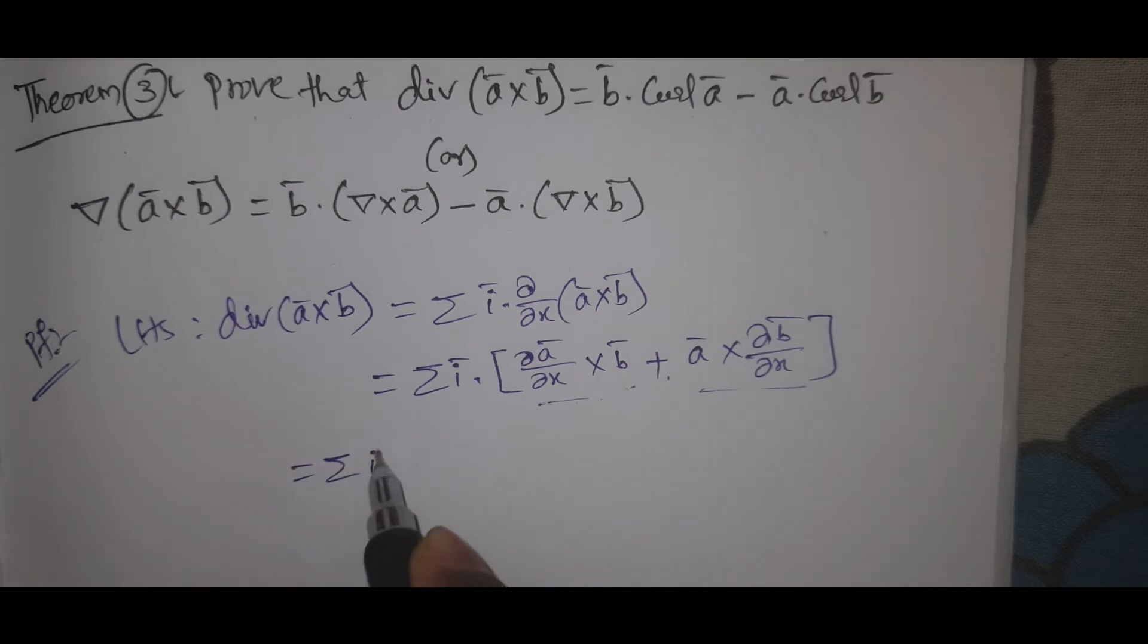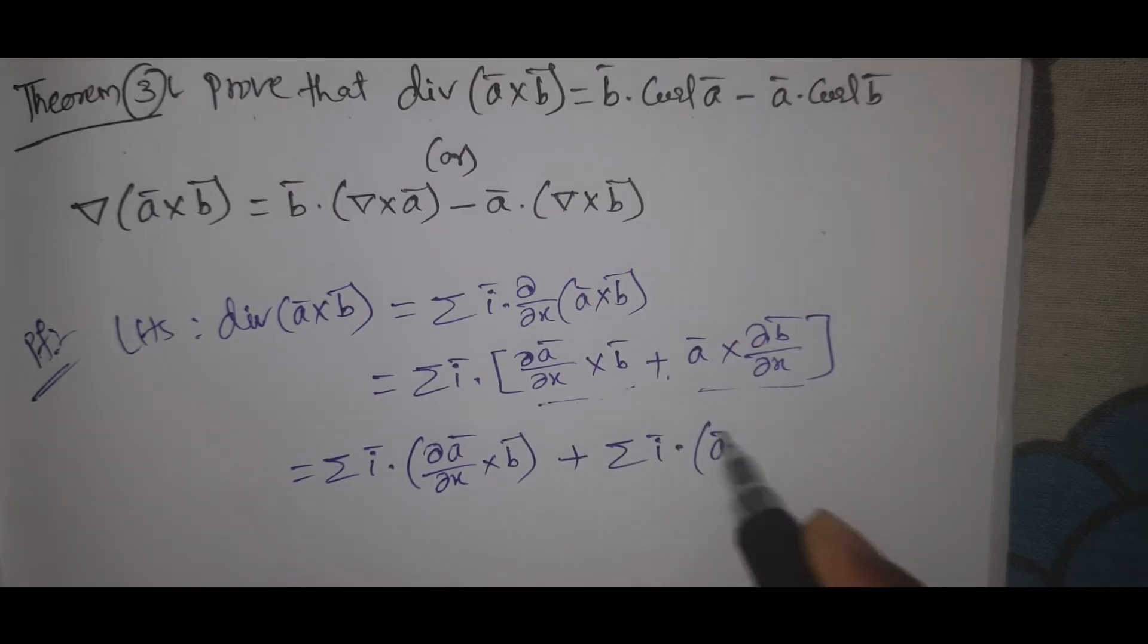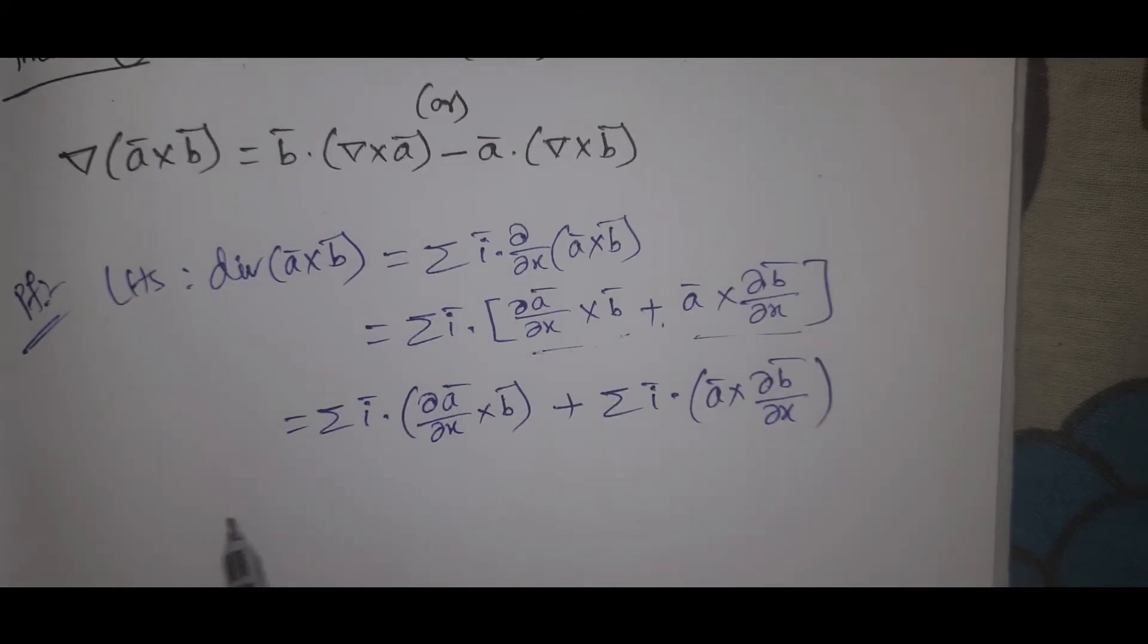Now see here, that equal to summation i bar dot dou a bar by dou x cross b bar plus summation i bar dot a bar cross dou b bar by dou x.